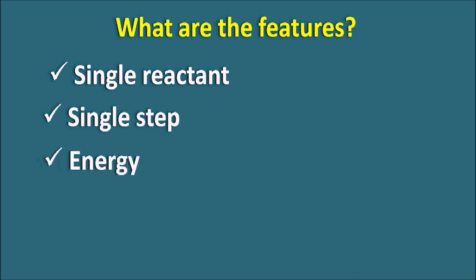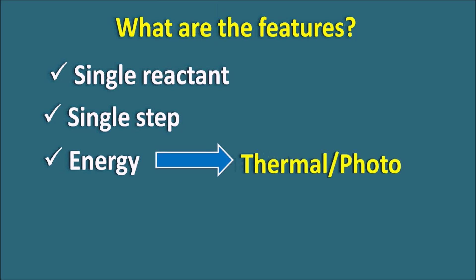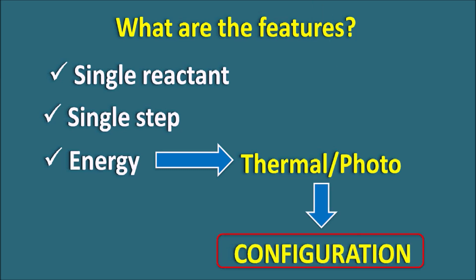The third feature is the energy. These reactions require energy, and this energy can be supplied in the form of either thermal energy or photo energy. We can use heat, or we can use UV radiation in order to drive the reaction. Interestingly, based on the source of energy — whether thermal or photo — the configuration of the product will be fixed. The configuration of the product depends on the source of energy supplied, whether thermal or photo, as well as the number of pi bonds present in the reactant. Today in this video let us see how this electrocyclic reaction takes place, different examples, and how the source of energy can affect the configuration of the product.